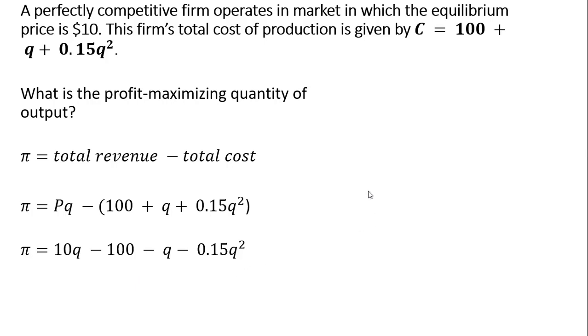Our next step for profit maximization is to take a derivative. We are going to take a derivative of this profit function with respect to quantity. The derivative of 10Q is 10. The derivative of minus 100, that's a constant, so that drops out, that's just 0. The derivative of minus Q is just minus 1.